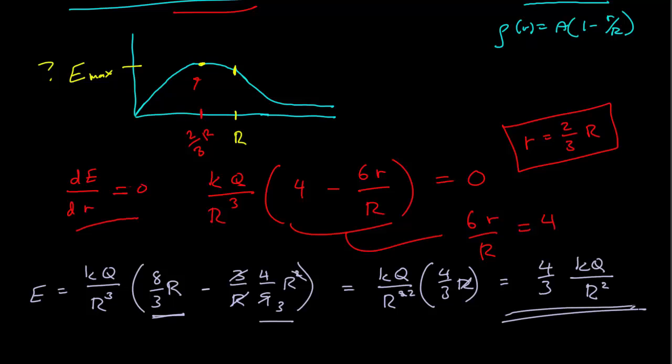So that is the value of the maximum electric field. It is at 2 thirds of the full radius of the system, and it's also 1 third larger than the field at the radius. At the radius, it's KQ over R squared, and it's 1 third larger at the maximum value.